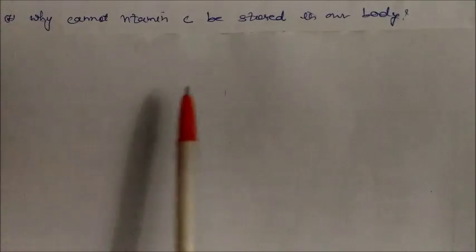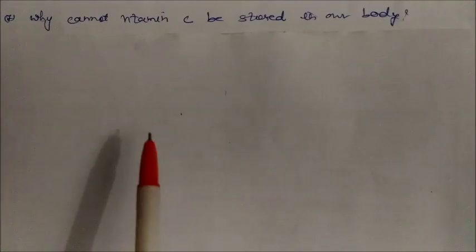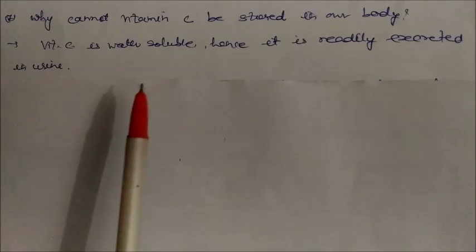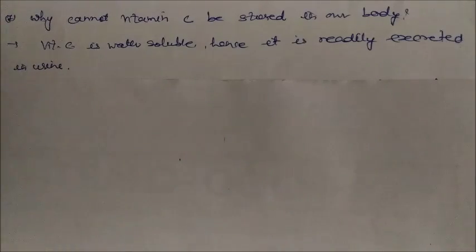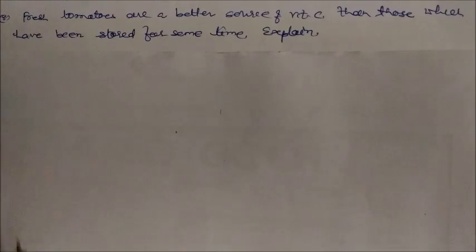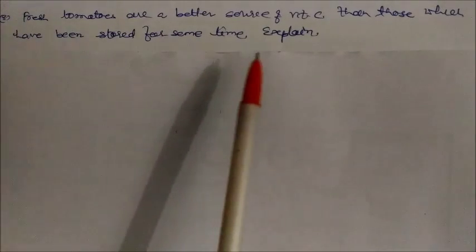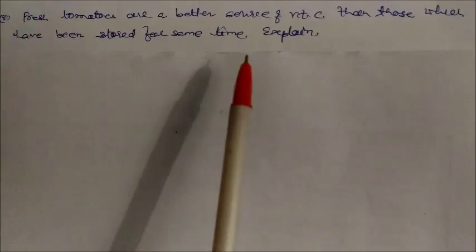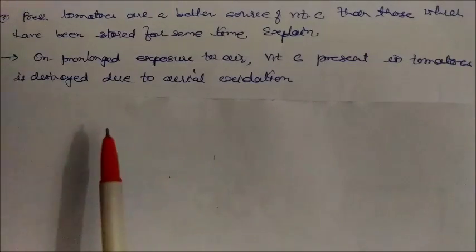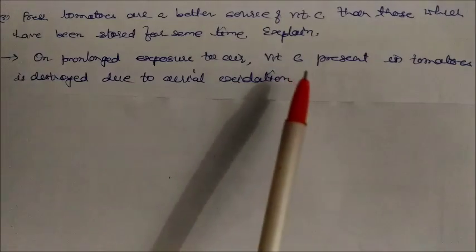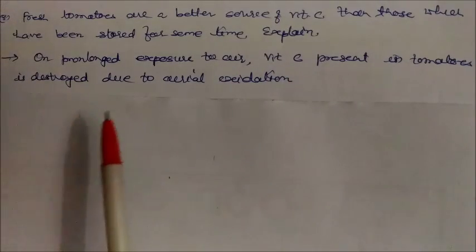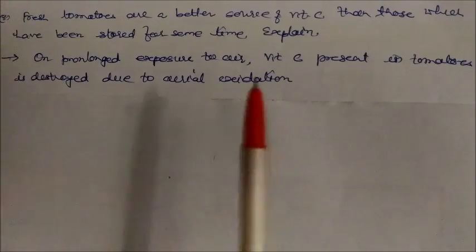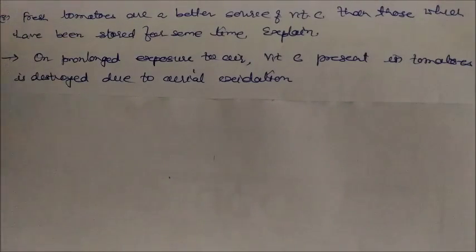Why cannot Vitamin C be stored in our body? Because Vitamin C is water-soluble, it is readily excreted in urine and cannot be stored. Fresh tomatoes are a better source of Vitamin C than those stored for some time, because on prolonged exposure to air, Vitamin C in tomatoes is destroyed due to aerial oxidation.